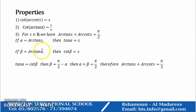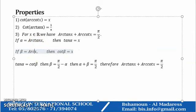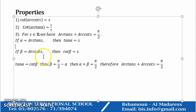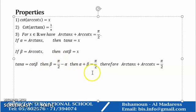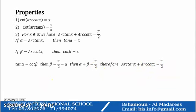Why is that? Let arc tangent of x equal α, then tangent of α equals x. Let β equal arc cotangent of x, then cotangent of β equals x. Since x equals x, then tangent of α equals cotangent of β, which means β equals π/2 minus α. Transferring α to the other side gives α plus β equals π/2. Therefore, arc tangent(x) plus arc cotangent(x) equals π/2.